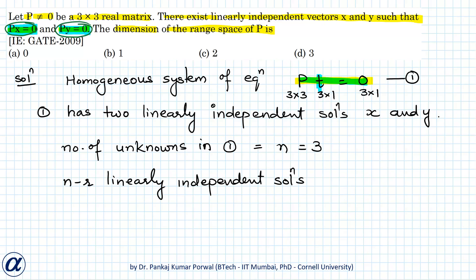Here n is number of unknowns in equation 1, and r is rank of matrix P. And we know that there are two linearly independent solutions for equation 1. So we know n minus r equals 2. And we also know that n equals 3. So from this I get 3 minus r equals 2, which gives me r equals 1. Here this r is rank of our matrix P, and that is also equals to dimension of range space of P.